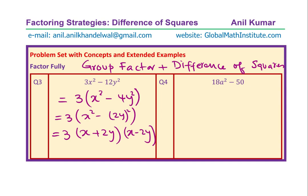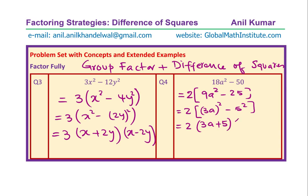The next example is 18a squared minus 50. We follow the same strategy: 18 is not a perfect square but 9 is; 50 is not a perfect square but 25 is. Taking 2 common, we get 2 times (9a squared minus 25), which is 2 times ((3a) squared minus 5 squared). That is difference of squares, which factors as 2 times (3a plus 5) times (3a minus 5). Sometimes questions involve two combinations of factoring: group factoring, then difference of squares.